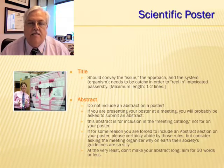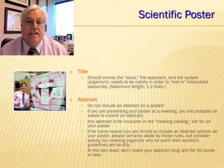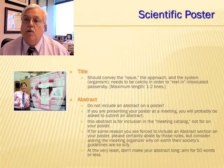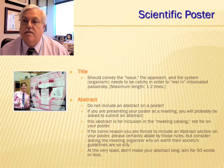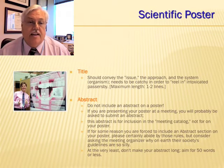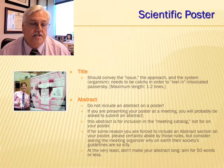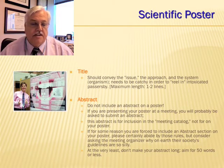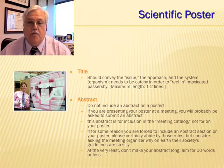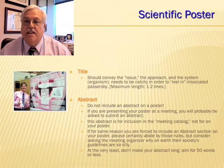In the next four slides, we're going to talk about the anatomy of a scientific poster. First of all, obviously you need a title. The title should convey the issue, the approach, or the system. It sort of needs to be catchy in order to reel in intoxicated passersby — I say that tongue-in-cheek because many poster sessions are at a wine and cheese party or at least in an area where alcoholic beverages are usually appropriate. So at the very least, don't make your title too long.